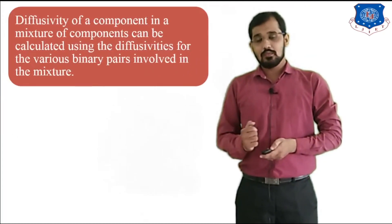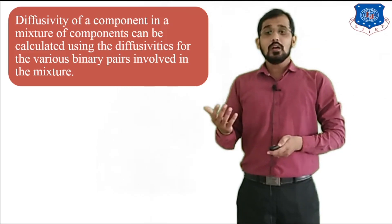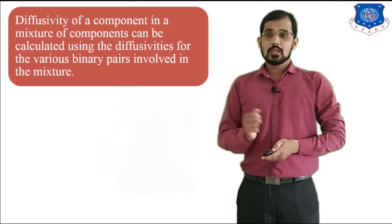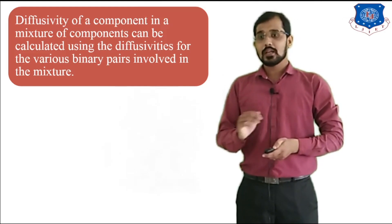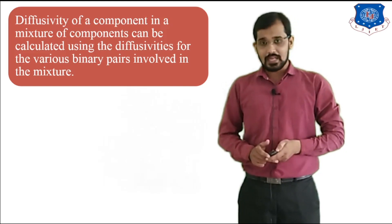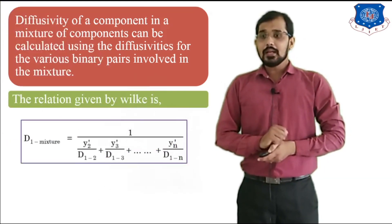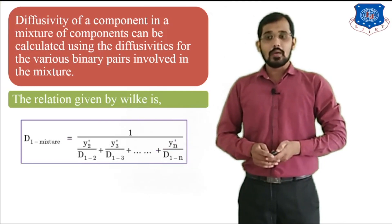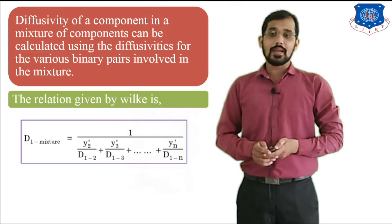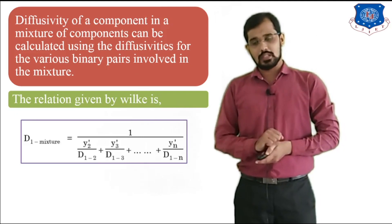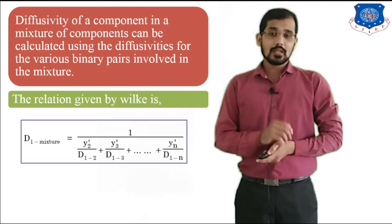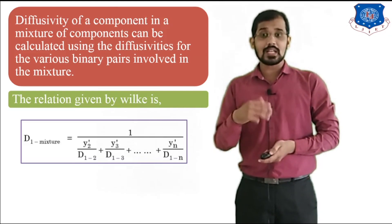Now we will see various equations that explain the diffusivity coefficient of various components. First is the Bilke relation, which is for multicomponent systems. The diffusivity of a component in a mixture of components can be calculated using the diffusivities for the various binary pairs involved in the mixture. According to Bilke, D1-mixture equals 1 divided by [Y2'/D12 + Y3'/D13 + ... + Yn'/D1n]. D1-mixture means diffusion coefficient of component 1 in the mixture of various other components.